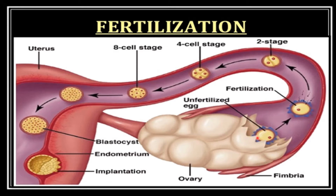Immediately after ejaculation, the female genital tract causes the sperm to undergo certain changes that enable it to fertilize the ovum — this takes about 10 hours. Sperm capacitation occurs due to removal of certain factors, including the cholesterol content of the acrosomal membrane. The membrane is tough because of high cholesterol content, but when the sperm reaches the female genital tract, the cholesterol content decreases.